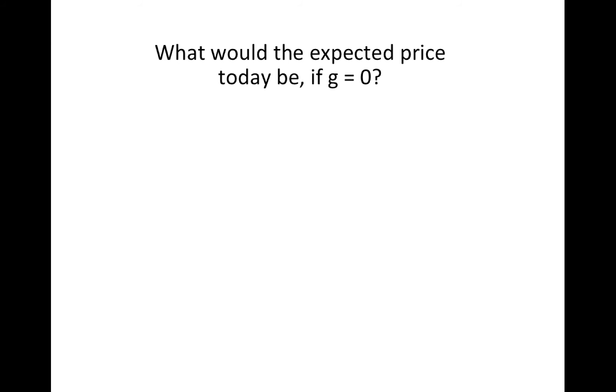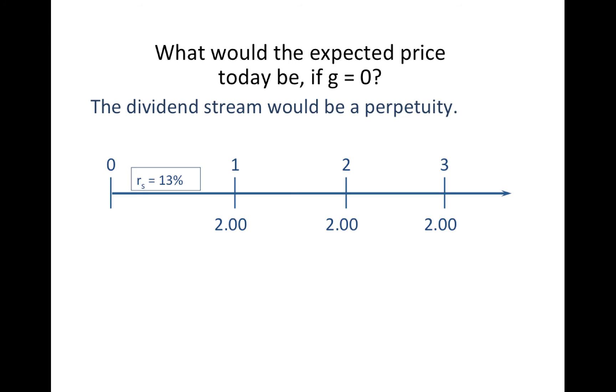What would happen if the growth rate is 0? We can easily account for that. In this case, the dividend will be constant, and it will be R minus 0. It becomes similar to the valuation of a perpetuity. $2 divided by 0.13, the price would become 15.38. You see how much it dropped, how important growth is for the price of a share?